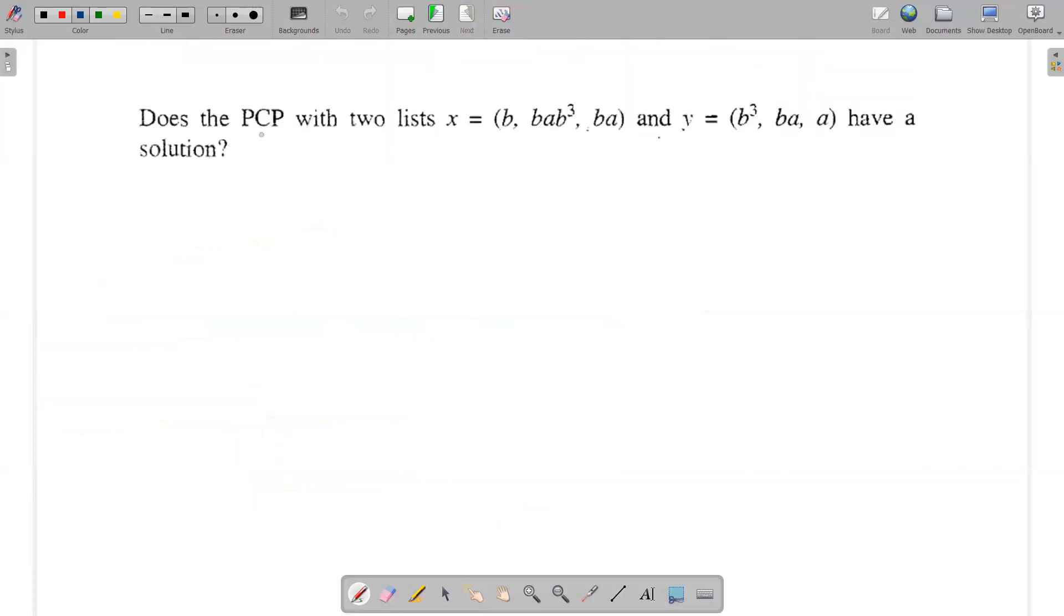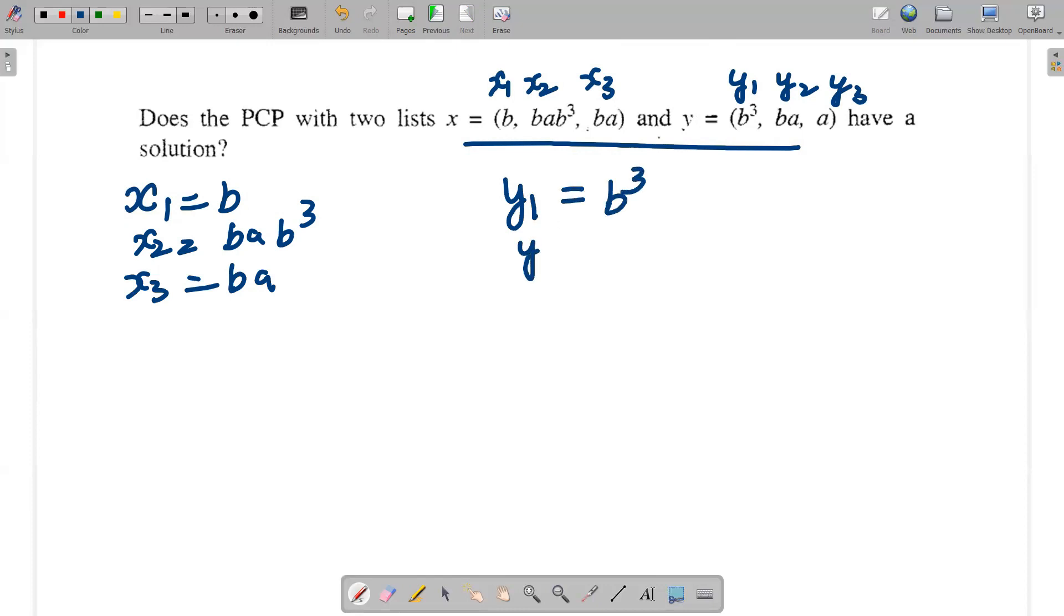The question is: does PCP with two lists have a solution? x1 is b, x2 is bab³, and x3 is ba. y1 is b³, y2 is ba, and y3 is a.